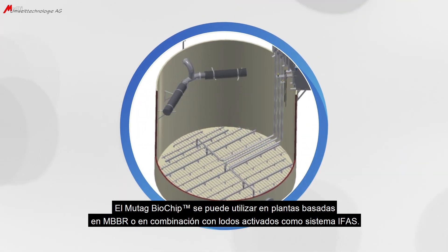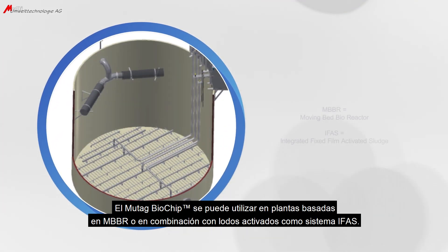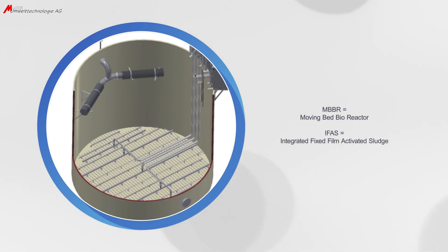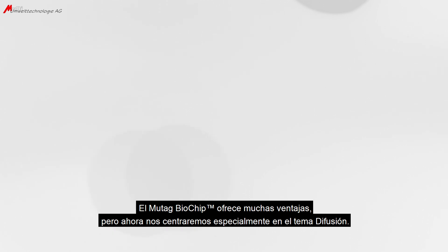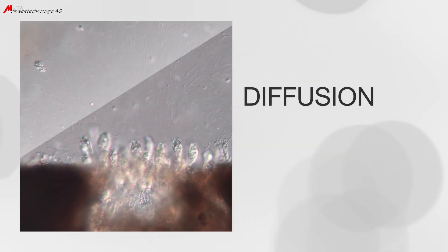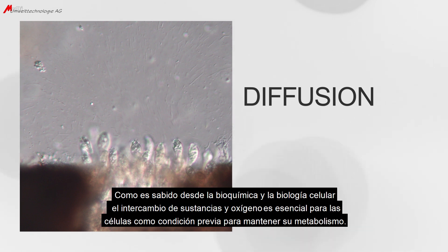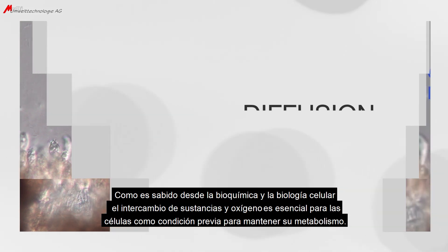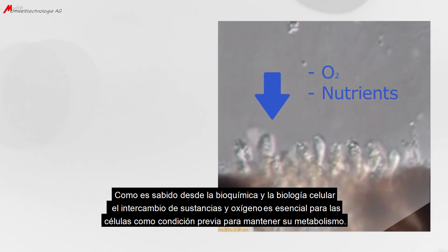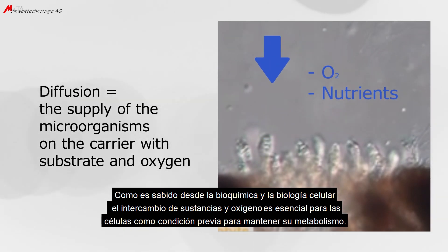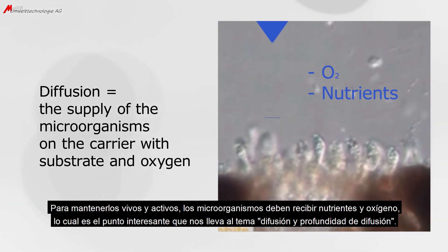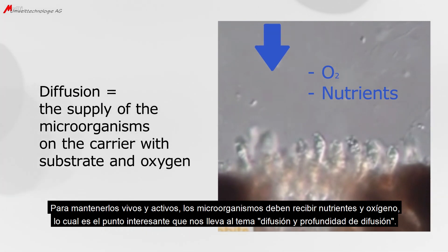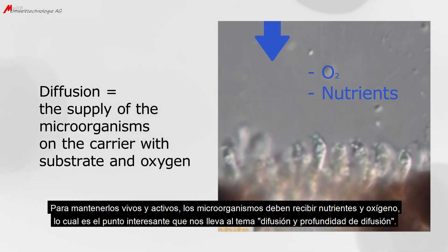The Mutag Biochip can be used in MBBR-based plants or in combination with activated sludge as an IFAS system. The Mutag Biochip provides many advantages, and we will now especially focus on the subject of diffusion. As known from biochemistry and cellular biology, the exchange of substances and oxygen is essential for cells to uphold their metabolism. In order to keep microorganisms alive and active, they need to be supplied with nutrients and oxygen — this leads us to the topic of diffusion and diffusion depth.